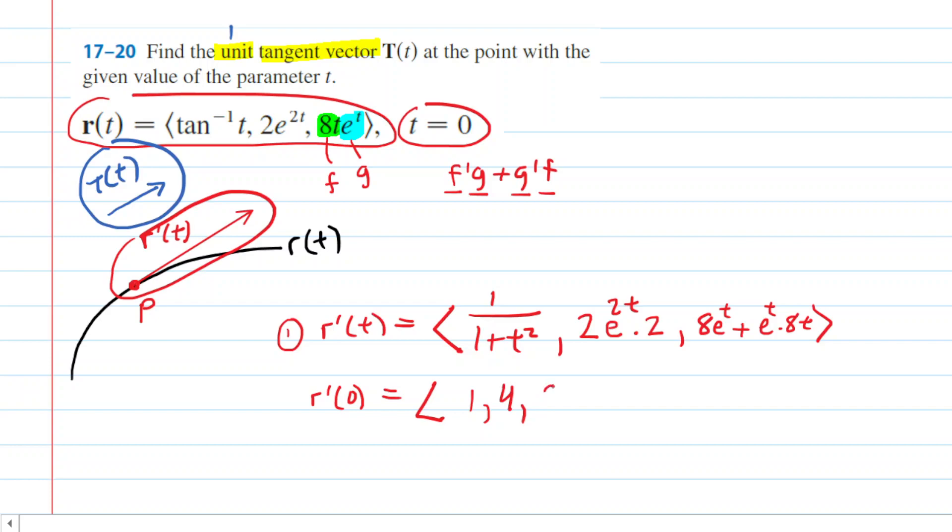And then over here, we're going to have 8e to the 0 plus e to the 0 times 8 times 0. Of course, all that will zero out, and then we have 8 times 1, which is just 8. So the z component of the tangent vector is just equal to 8. So this is great. Now we have our tangent vector.